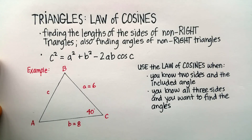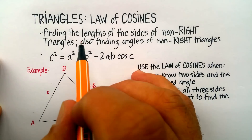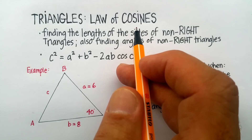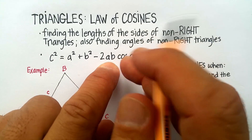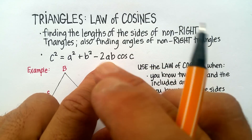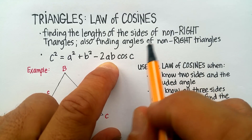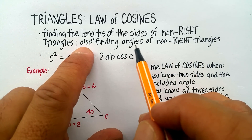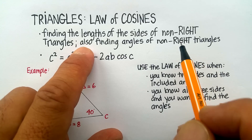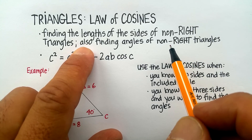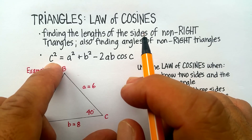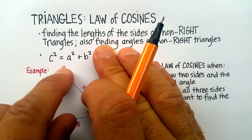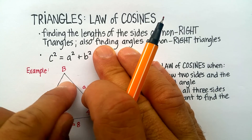In this video we're going to talk about something called the law of cosines. The law of cosines is kind of a hybrid between the Pythagorean theorem and trigonometry. You can use the law of cosines when you want to find the lengths of the sides of a non-right triangle or the angles of a non-right triangle. Remember that the Pythagorean theorem — c squared equals a squared plus b squared — is only available for right triangles, triangles that have a 90-degree angle.